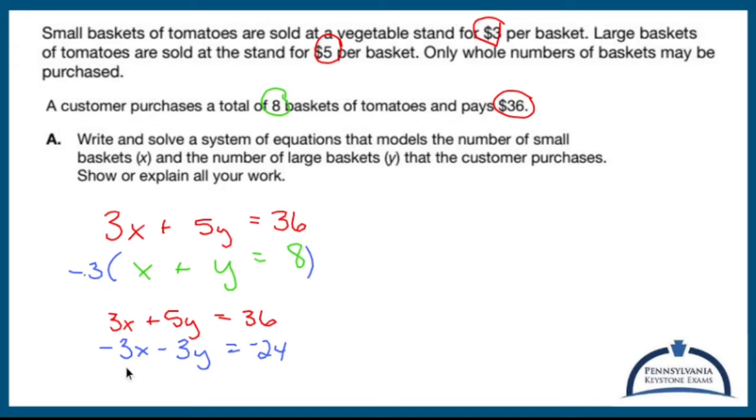Add those rows up. The x in this case is going to go away. 5y and 3y is 2y, and 36 minus 24 is 12. So let's bring the 2y equals 12 up here. Divide both sides by 2. Y is 6.